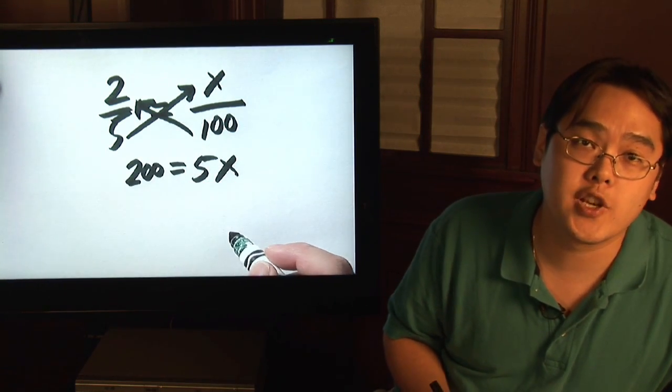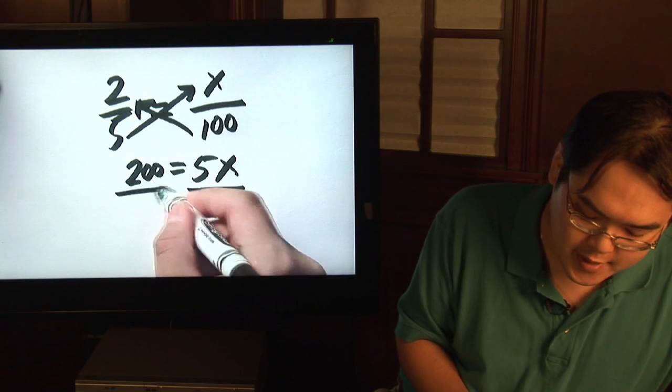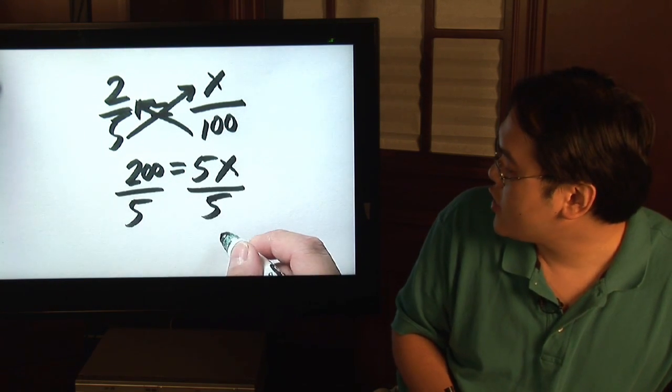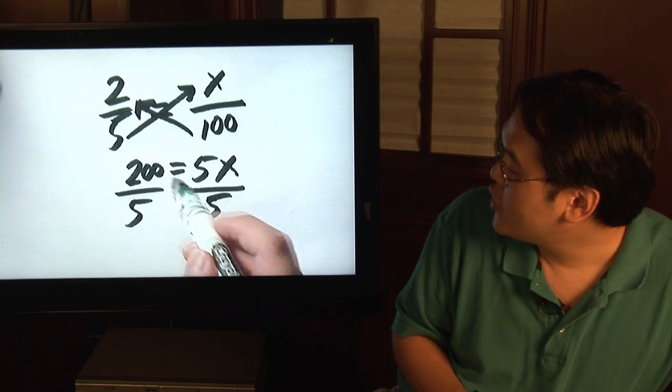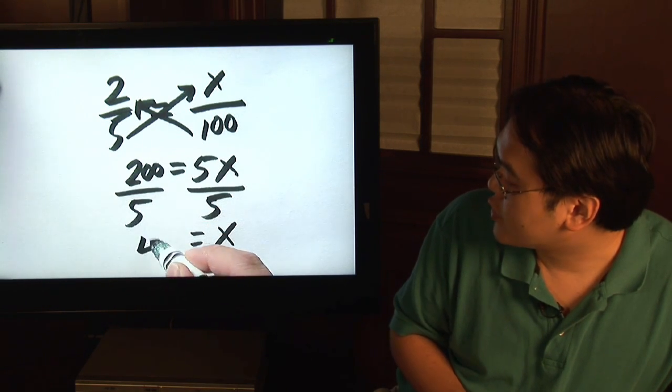So, you have a basic algebra equation and then just go ahead and divide by 5 to figure out what x is and you'll find out that x is equal to 200 divided by 5 is equal to 40.